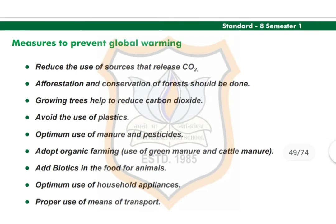Measures to prevent global warming: reduce the use of sources that release carbon dioxide. Afforestation and conservation of forests should be done. Growing trees helps to reduce carbon dioxide. Avoid the use of plastic. Make optimum use of manure and pesticides.